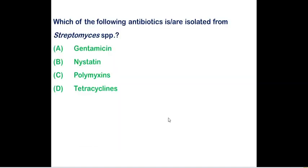Which of the following antibiotics are isolated from Streptomyces? This is a multiple-select question. Gentamicin is produced by Micromonospora purpurea, not Streptomyces. Nystatin is produced by Streptomyces. Polymyxin is produced by Bacillus polymyxa. Streptomycin is also produced by Streptomyces. So option B (nystatin) and option D (streptomycin) are both correct.